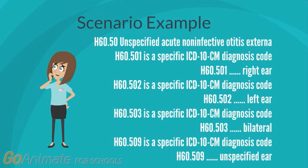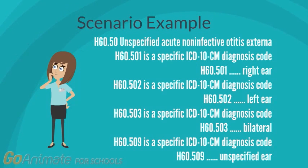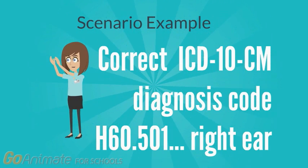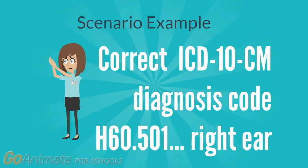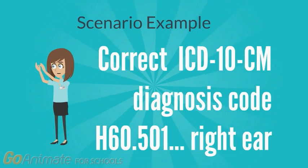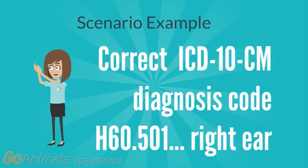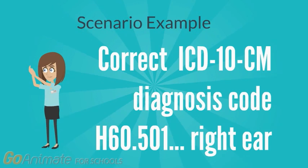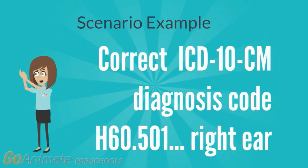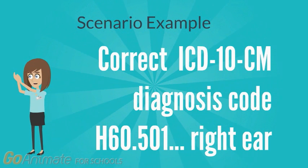What did our scenario say? We needed an additional character for the laterality to show that it was the right ear where the infection was. Everyone should have H60.501.